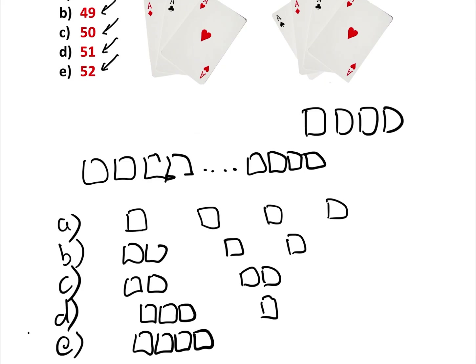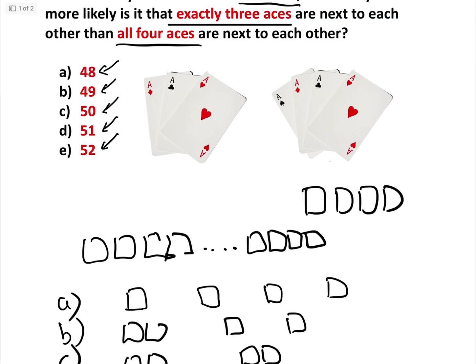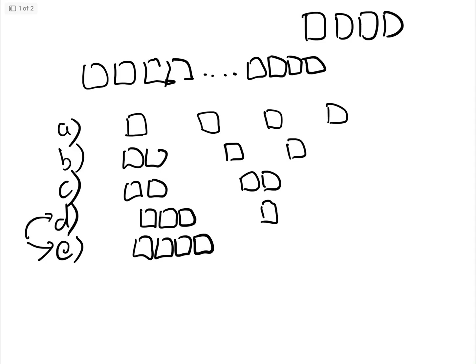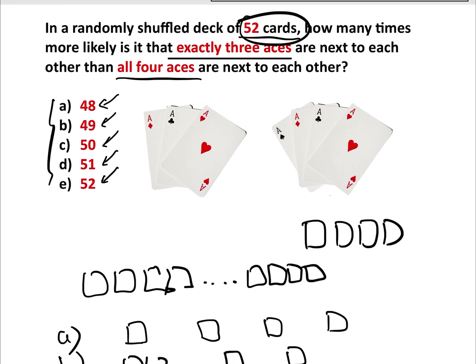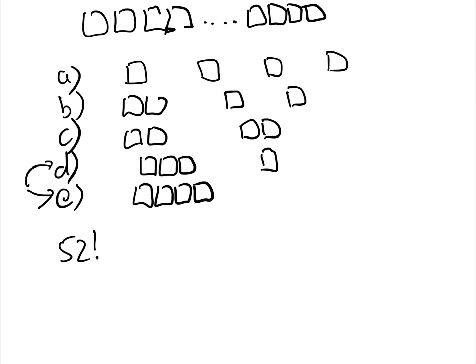What the question asks is what is the probability of D happening divided by what is the probability of E happening, which will give us one of the answers A, B, C, D, or E. But it's just as easy working out the whole lot. A deck of 52 cards has 52 factorial ways of arranging those 52 cards, and there are 48 factorial ways of arranging the other 48 cards. We're going to use that in all of these arrangements.